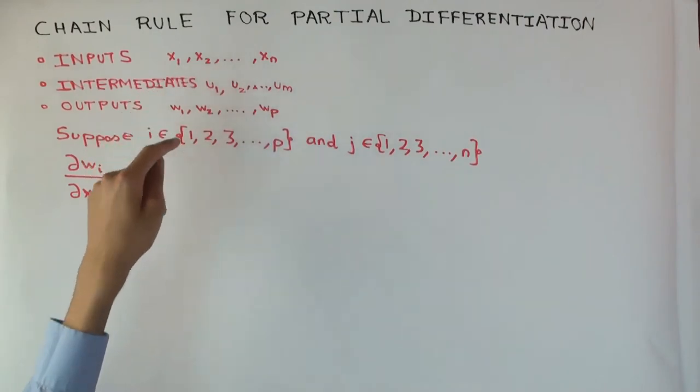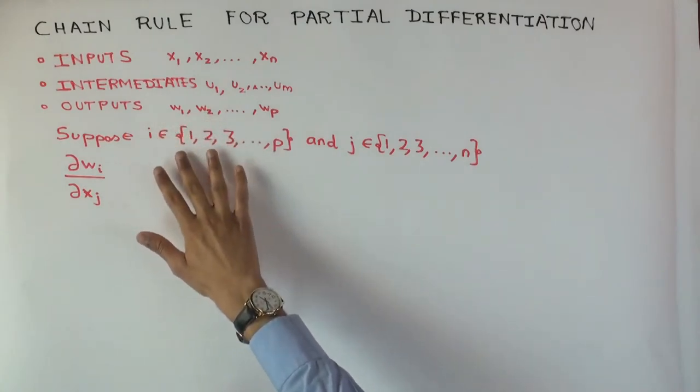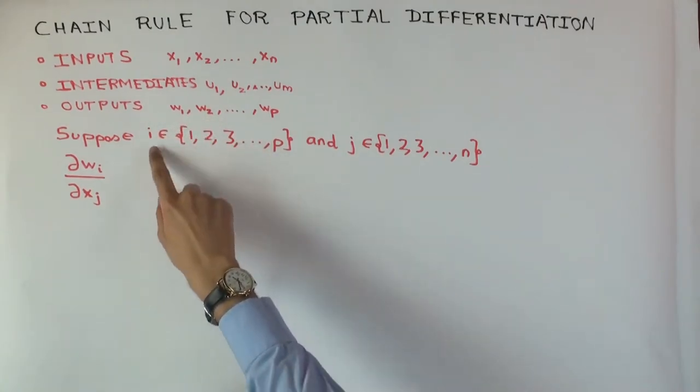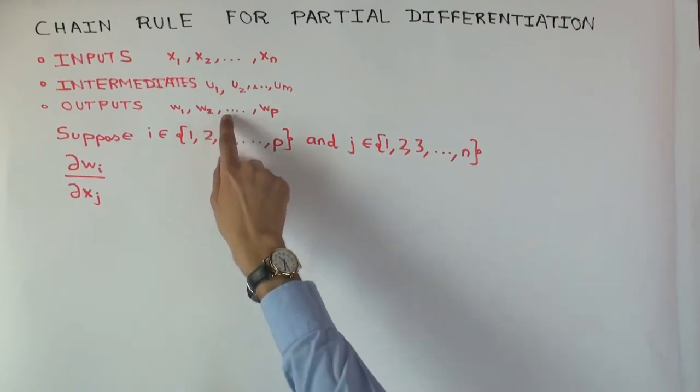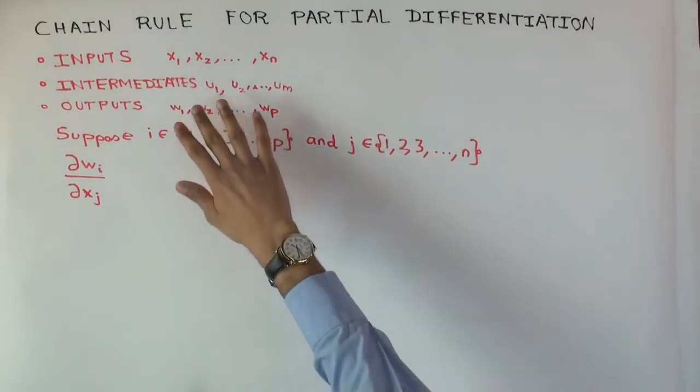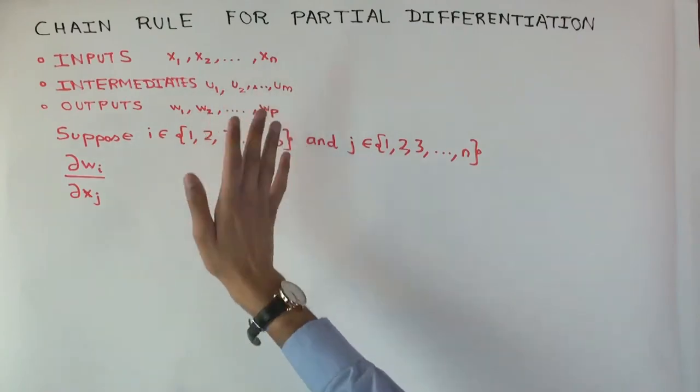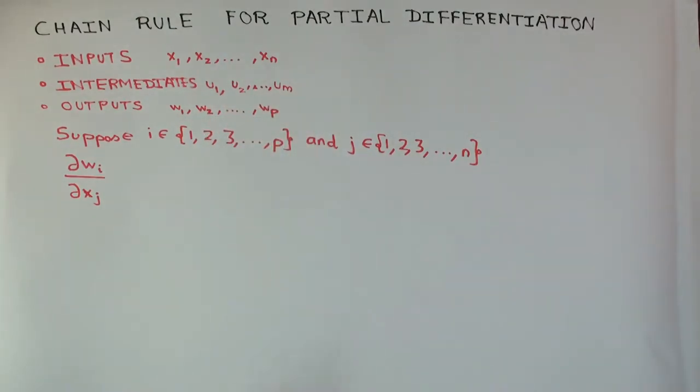We have so many outputs, but actually it doesn't matter because I'm just going to concern myself with one particular output. I pick an i from 1 to p, that's just picking one of the outputs, and I pick a j from 1 to n, that's one of the inputs. So at any given time, I'm looking at only one output.